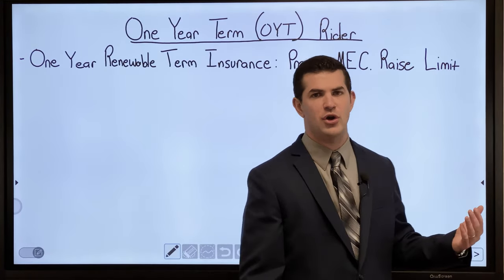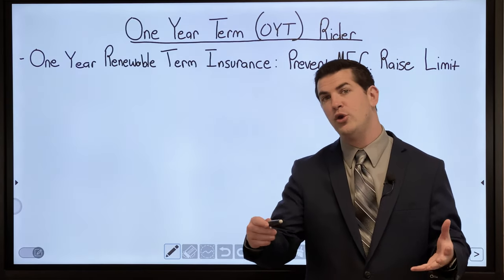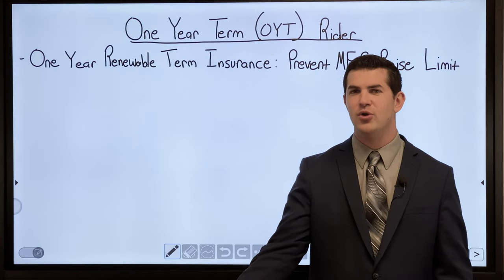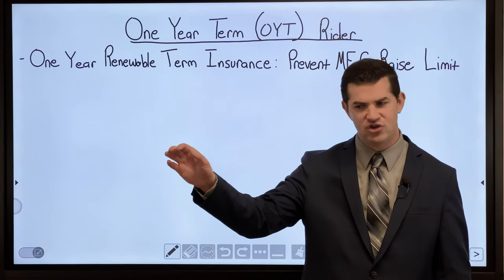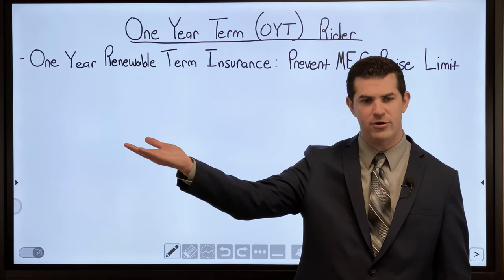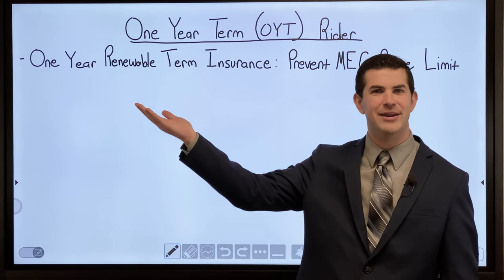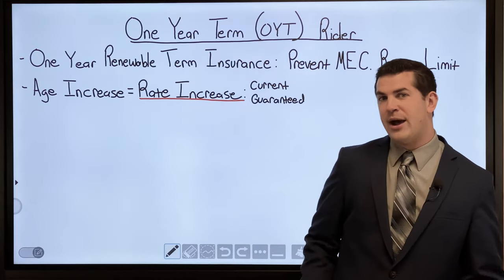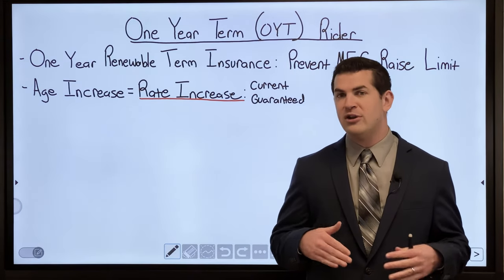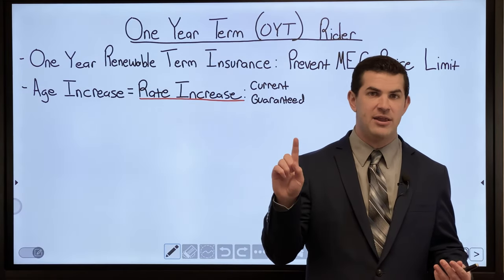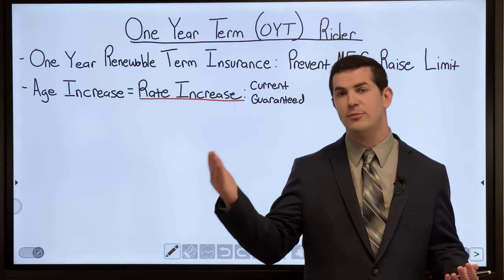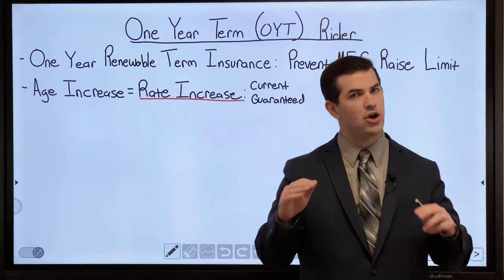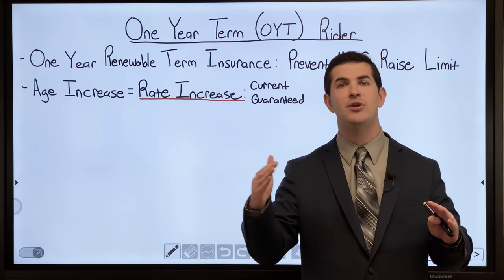It is one-year renewable term insurance — a term rider. We often use it when planning for high cash value life insurance policies to raise the death benefit in a very cheap, cost-efficient manner, which raises the MEC limit and allows more money into PUAs. As its name implies, it's a one-year term insurance rider — every year as you grow older, the cost of that rider increases.